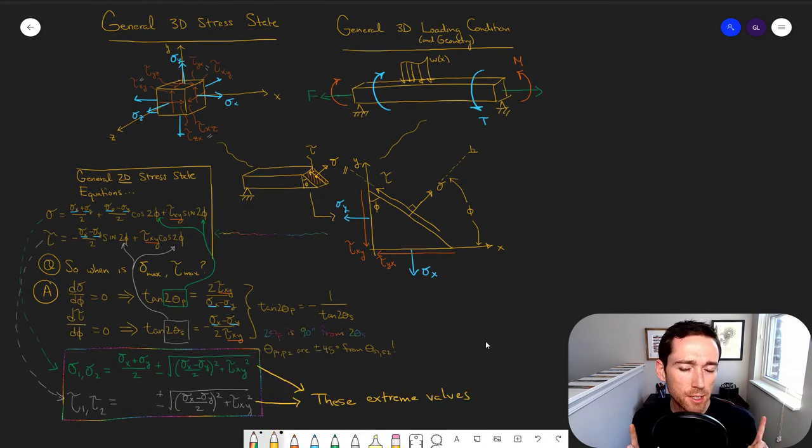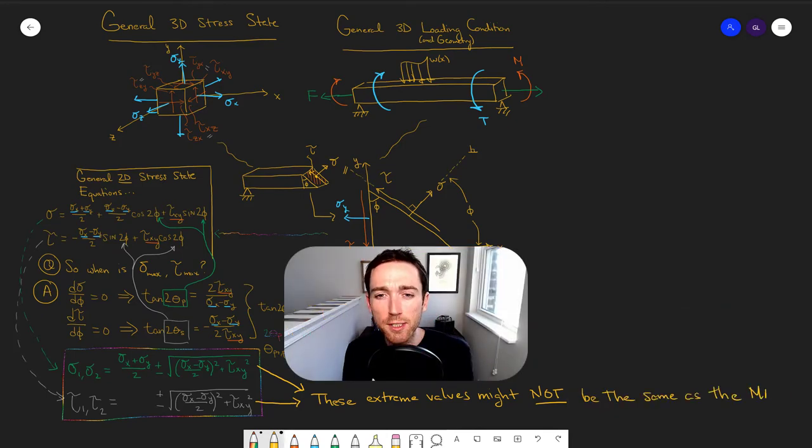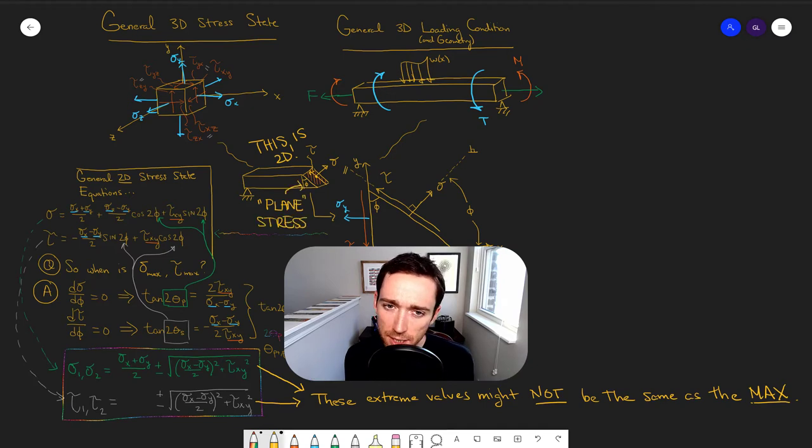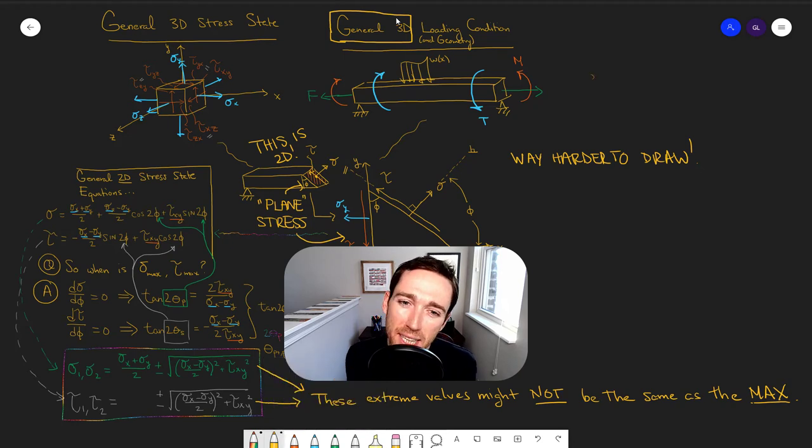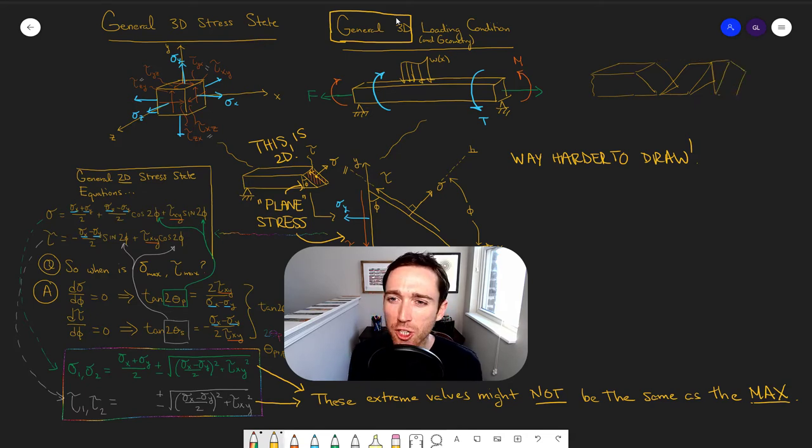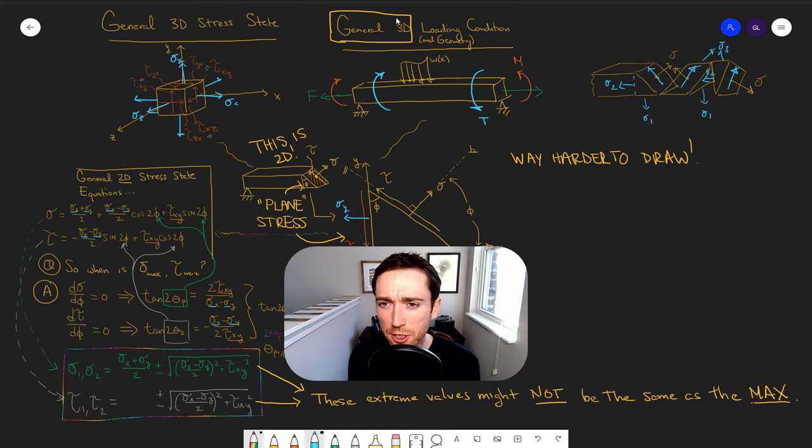So that means that if there was something happening out of plane in 3D, not like the 2D case that we started from last time, but like the 3D case that we drew up there, it'd be a lot harder to draw this because you'd have to make sure that along your bar you're drawing each of the directions where you would have a normal stress in each principal direction and then also a shear stress along each of those planes. And so you can see it gets a little hairy here.